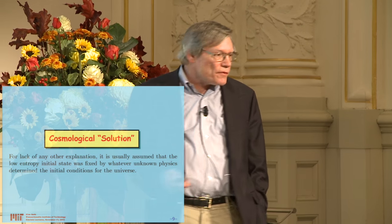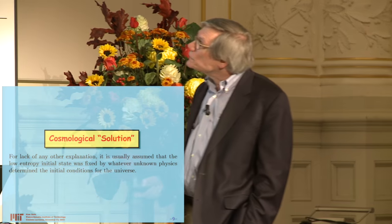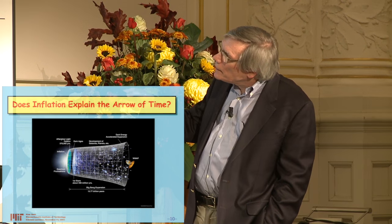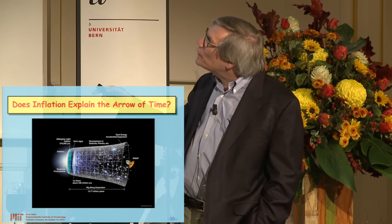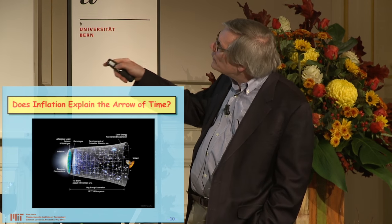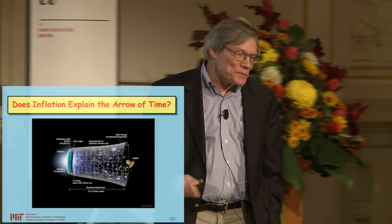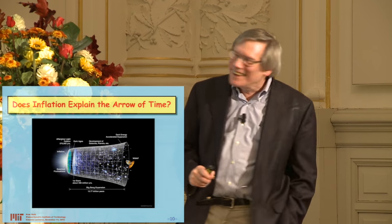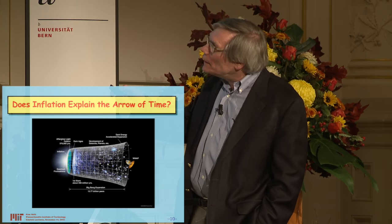That is basically what Feynman ended up saying in his Character of Physical Law lecture. The idea of a cosmological solution is that at some early time the universe was born by quantum fluctuations, then shortly after inflation happened, and then the universe expands and starts accelerating again. This is a picture made by the WMAP team. So the question is: can we attribute the low entropy state to what happened there, and if so, how?